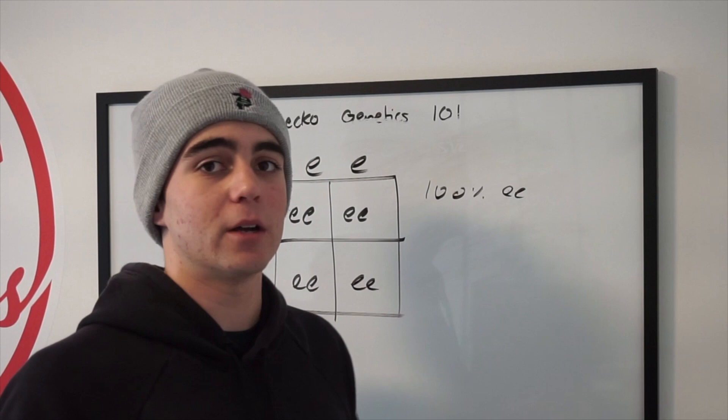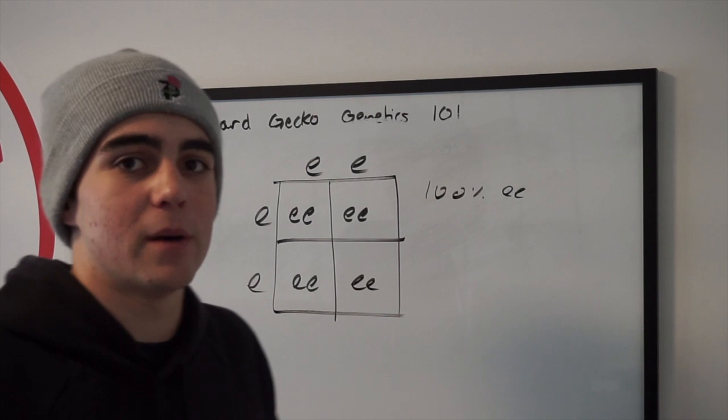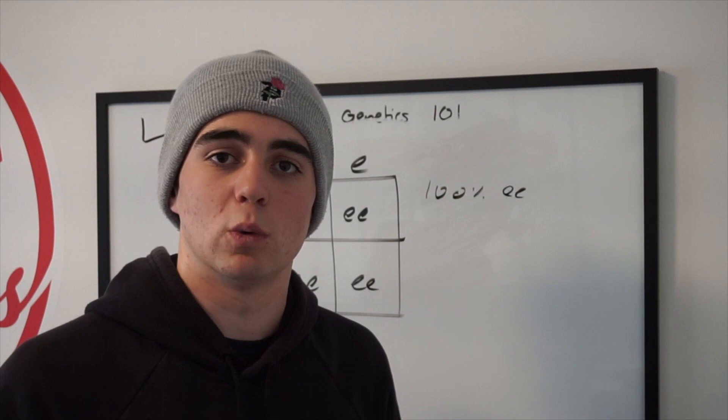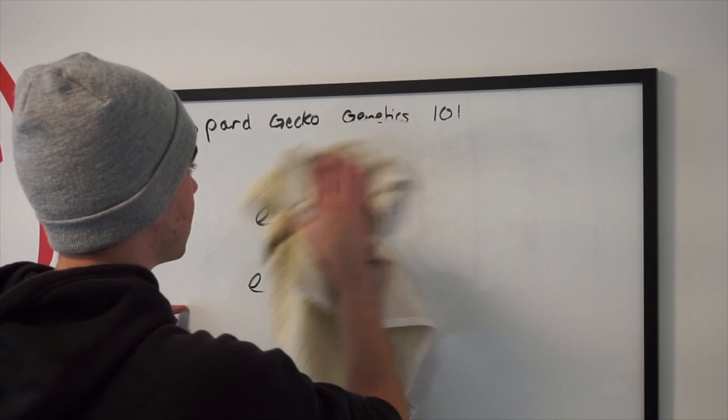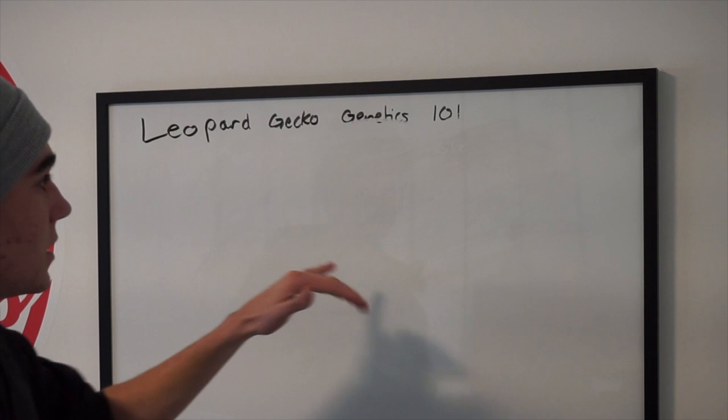Because we know how genetics work and can use a Punnett square to understand the probabilities, we can know what we're going to get from a pairing. We can understand what the letters mean and what the probability is of getting a certain recessive morph. If you pair recessive to recessive, you'll get 100% recessive babies. So if you want to spend a couple extra dollars instead of buying a het, you can buy a visual recessive — which are obviously pretty cheap, like low-end or normal quality eclipses.